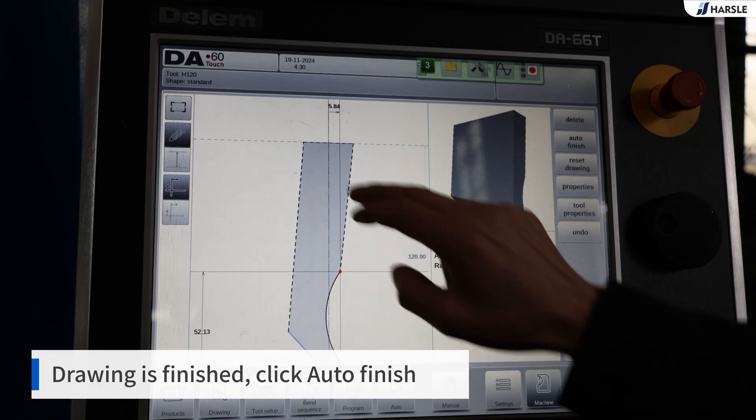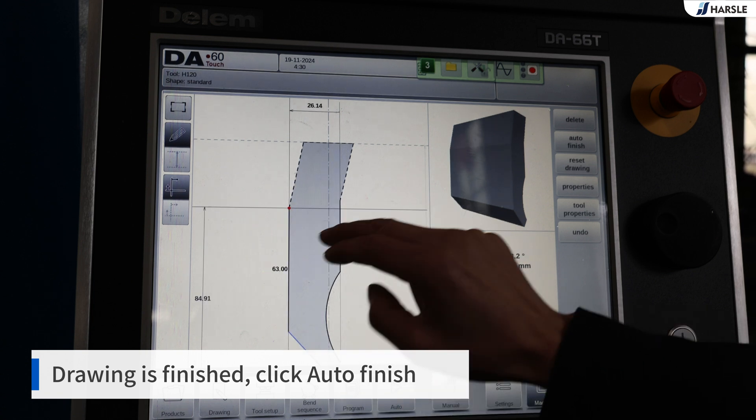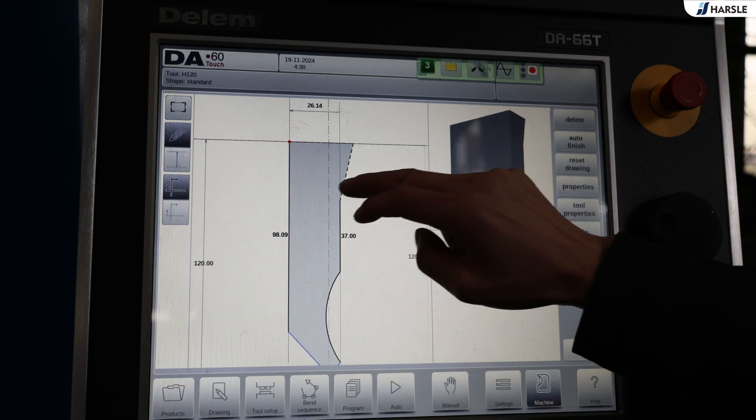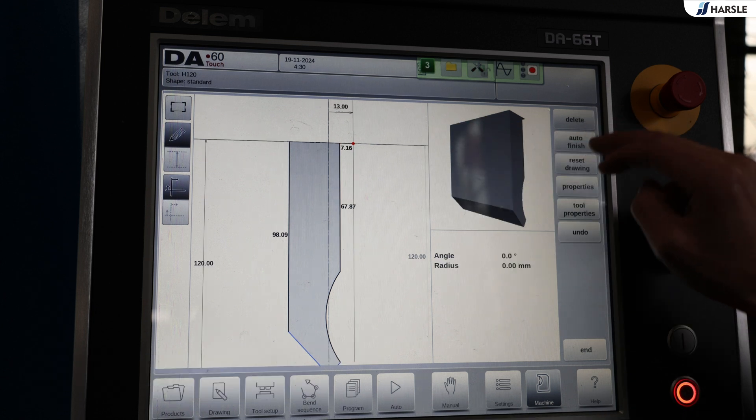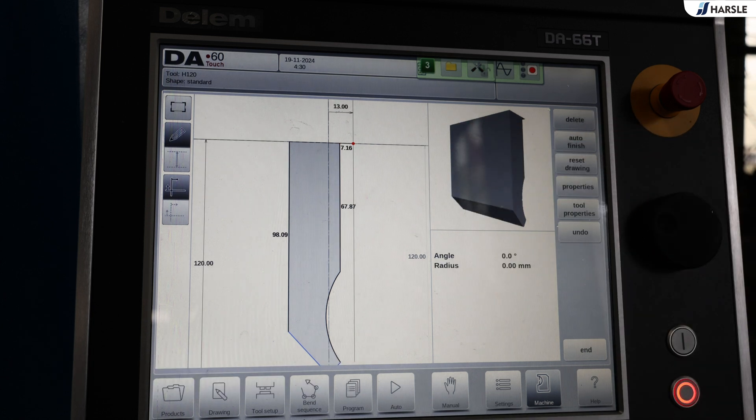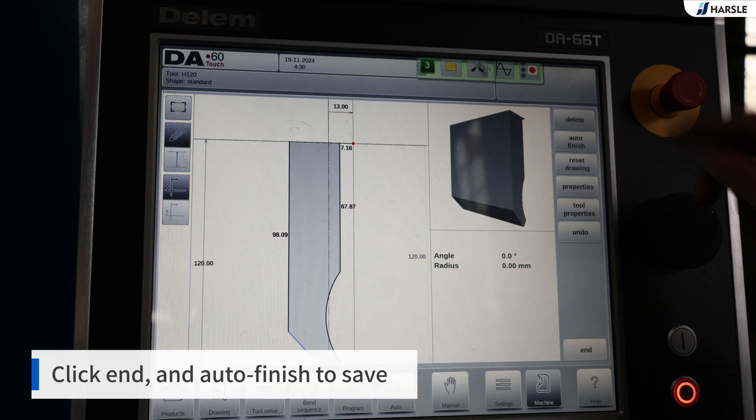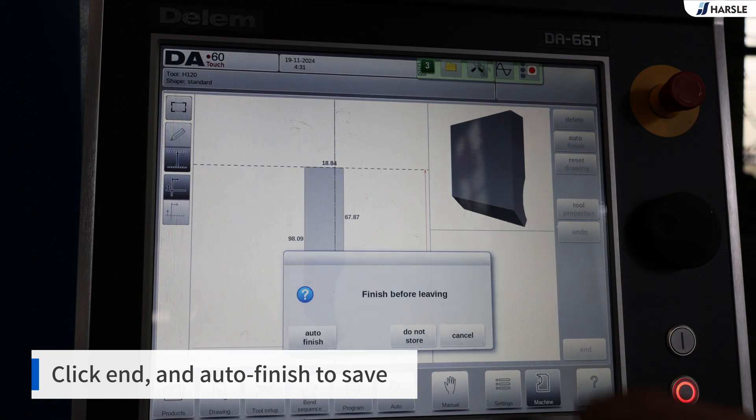Drawing is finished. Click auto finish. Delete redundant points. Click end and auto finish to save.